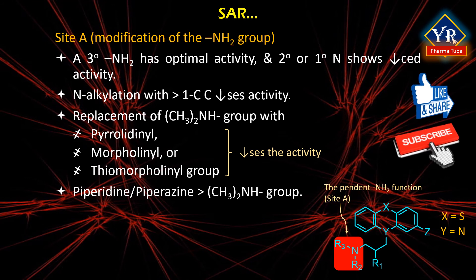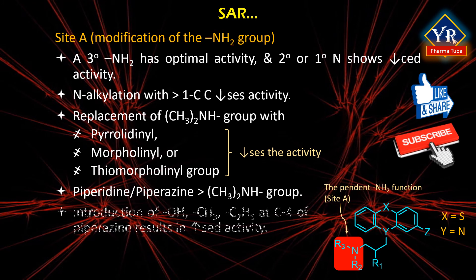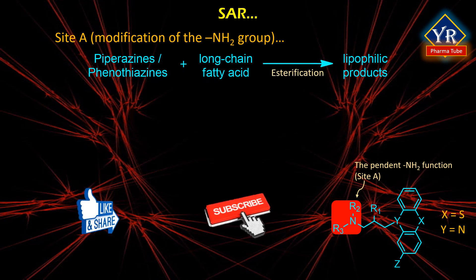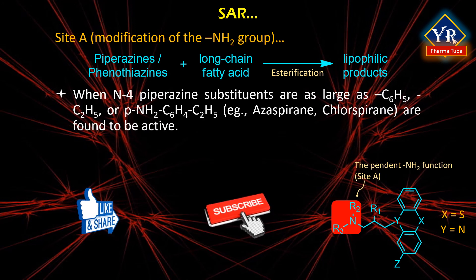Activity is decreased when the dimethylamino group is replaced by pyrrolidinyl, morpholinyl, or thiomorpholinyl groups. However, piperidine or piperazine is more potent than the dimethylamino group. Bridged piperidine derivatives retain a high degree of activity although they are bulky. Introduction of hydroxyl, methyl, or ethanol at C4 of piperazine results in increased activity. Piperazine phenothiazines may be esterified with long chain fatty acids to produce slowly absorbed, long-acting lipophilic products; due to slow release from oily deposition, significant activity is retained. When N-4 piperazine substituents are as large as phenyl ethyl or para-aminophenyl ethyl, they are found to be active, for example azaspirane and clorspirane.